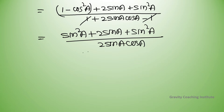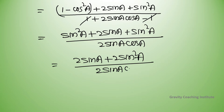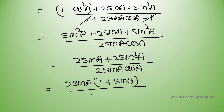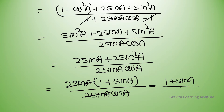This simplifies to (2 sin A plus 2 sin squared A) upon (2 sin A cos A). Taking 2 sin A common in the numerator gives (2 sin A)(1 plus sin A) upon (2 sin A cos A). The 2 sin A cancels, leaving (1 plus sin A) upon cos A, which equals RHS. Hence proved.